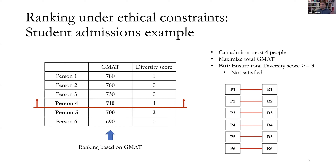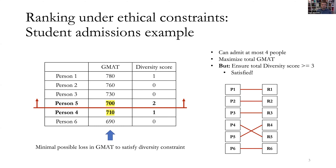So how could we correct this situation? A simple way would be to admit person five instead of person four in the ranking. This way, we can see that the total diversity constraint is satisfied in the top four admits, and we satisfy this constraint by minimally losing out on our primary objective, which is the GMAT score. Of course, this is a simplified example, and here we could solve it just by looking at the numbers.